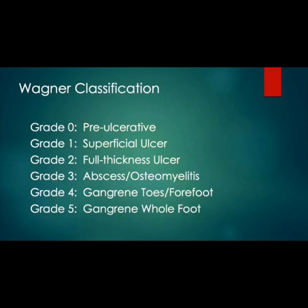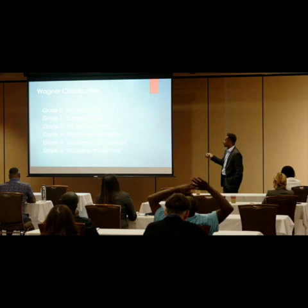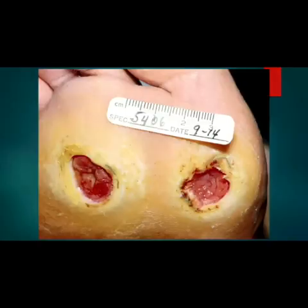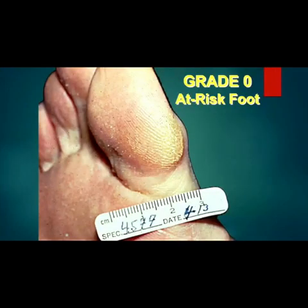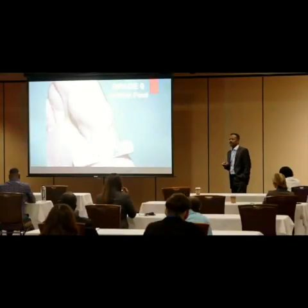What leads to ulcers? Poor circulation, neurotrophic changes, and loss of protective sensation. We learned the Wagner classification in school — grade 0 through grade 5. One key classification is grade 3, where you have abscess and osteomyelitis. Ulcers are most commonly found underneath the metatarsal heads. We always trim calluses, for example along the medial hallux — that's grade 0 — but depending on other patient issues, that patient might be at risk of developing higher ulcer stages if left untreated.